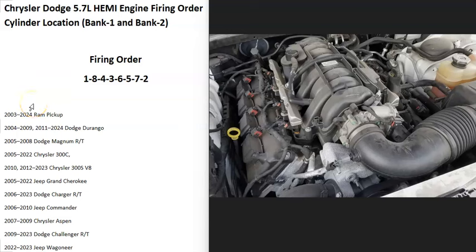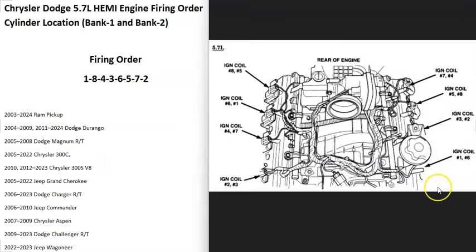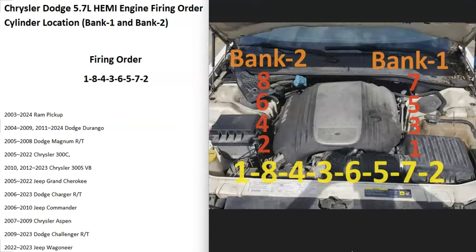Hello all. So if you have a Chrysler or Dodge 5.7 liter Hemi engine and you need to know what the firing order is, the cylinder location, and which bank is bank one and bank two, I thought I'd quickly go over this and show you what it is. This is going to include several cars and trucks. You can find this in a repair manual, but it can be kind of confusing and all over the place, so to make this easier I made up this diagram.